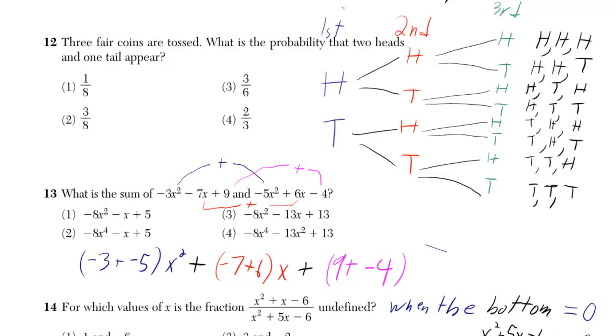On the first toss, you can either get heads or tails. If you got heads on the first toss, you could still get heads or tails on the second toss. If you had gotten tails on the first toss, you could still get heads or tails for the second toss.